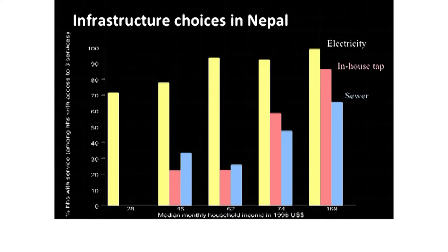Now we're going to look at data from Nepal from the Living Standard Measurement Surveys, looking only at households that have access to electricity, water, and sewer, and seeing what they chose as a function of income. For very poor households that had access, 70% chose electricity, but they did not choose water or sewer. As income goes up, more and more people chose electricity, and gradually more households choose water and sewer. But electricity is always higher for coverage among these households that have access, suggesting that households prefer electricity to water in this situation.